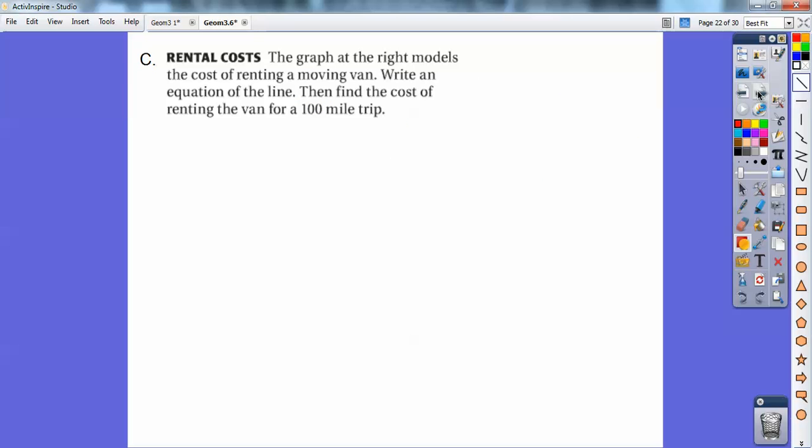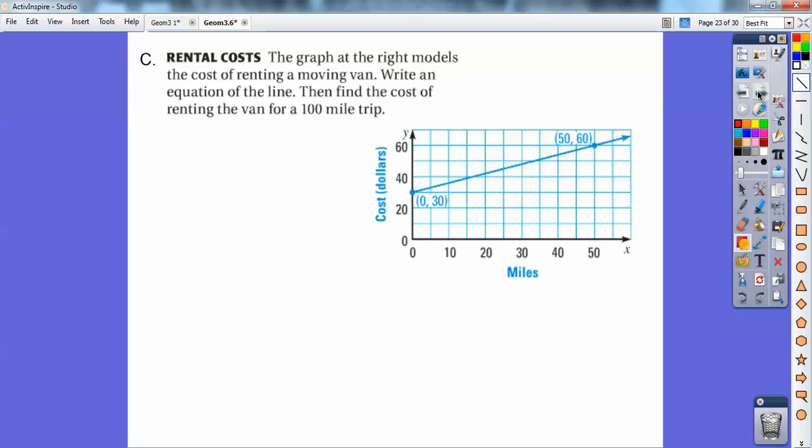So here's a word problem. The graph at the right models the cost of renting a moving van. Write an equation of the line, then find the cost of renting the van on a 100-mile trip. So it looks like we've got another graph right here. So I want to get it in Y equals MX plus B form.